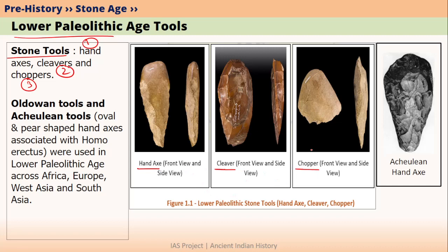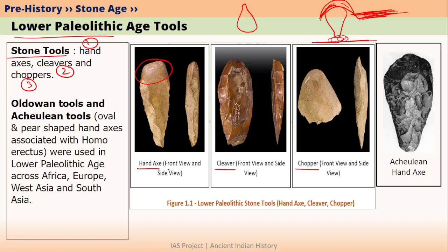For example, with a hand axe, they used to hold it with their hand and strike with it on whatever they wanted to break. In most books you will find the diagram shown in a 180-degree rotated manner, so please don't get confused. Hand axes have one blunt side and one sharp side. On the blunt side they used to hold it, and the sharp side was used to strike whatever they wanted to break.